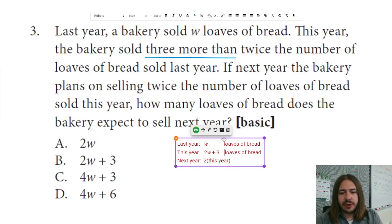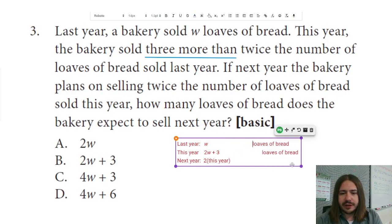Now, this year, we already know how many we had, right? It was 2W plus 3. So instead of just writing this year, I'm going to write 2W plus 3. And that's that many loaves of bread.